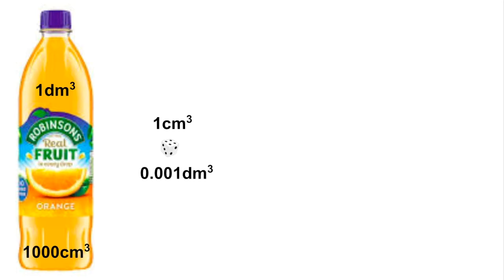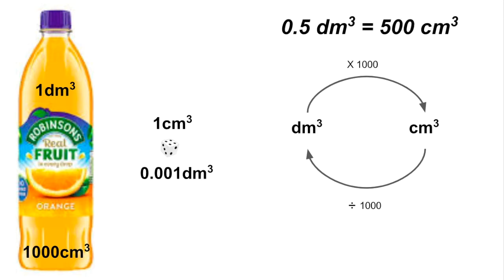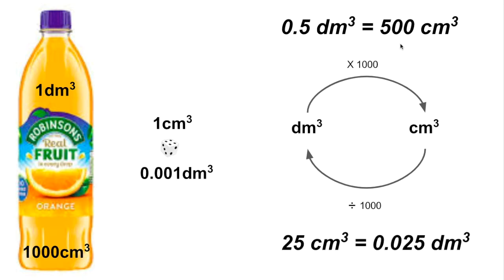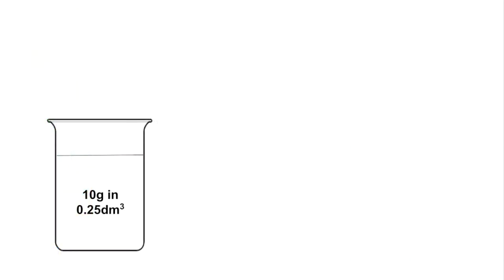In a lot of concentration calculations you need to be comfortable converting centimetres cubed into decimetres cubed. Going from dm³ to cm³ you multiply by a thousand; going the other way you divide by a thousand. For example, 0.5 dm³ multiplied by 1000 gives 500 cm³. And 25 cm³ divided by 1000 gives 0.025 dm³.